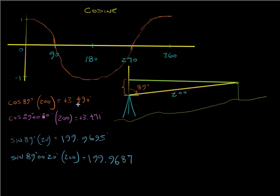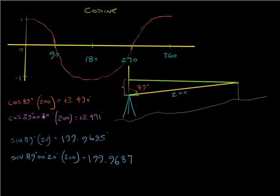Your vertical distance changed about 2 hundredths, while your horizontal distance didn't change. So that proves it right there: at a slope distance of 200 feet, if you change your angle just 20 seconds, your horizontal distance won't change but your vertical distance will.